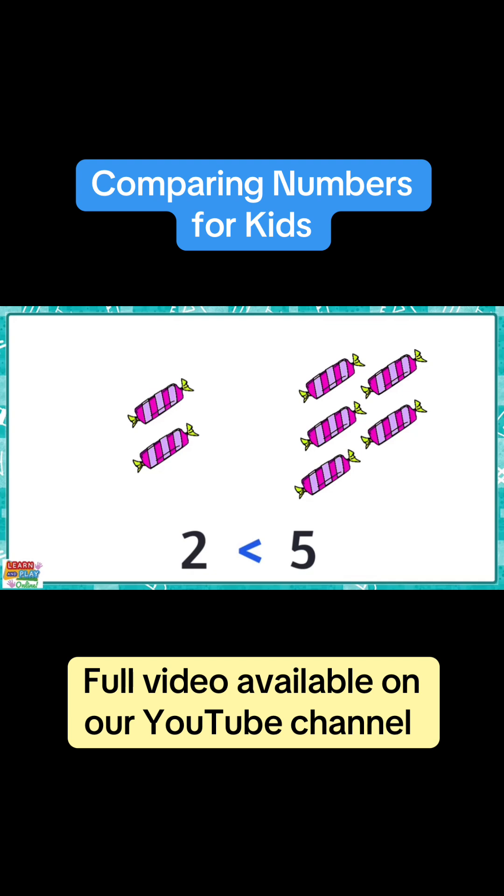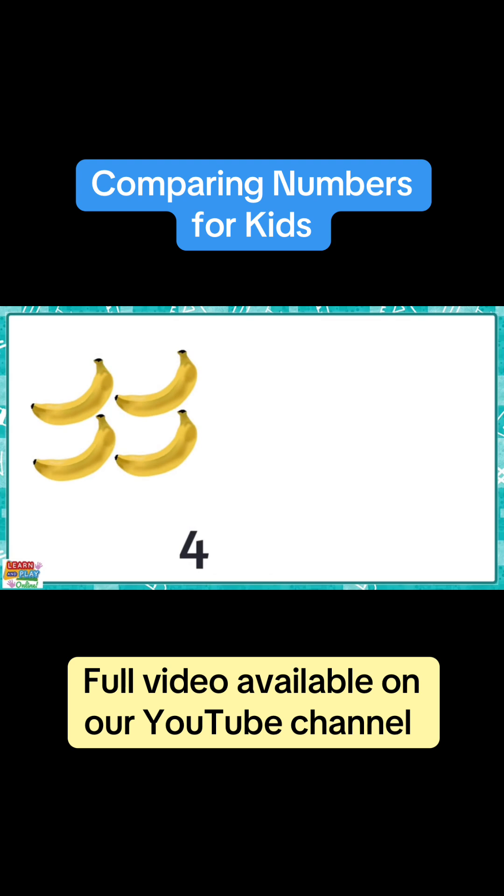So when we read the number sentence, we say that two is less than five. We have four bananas, and over here we have another four bananas.